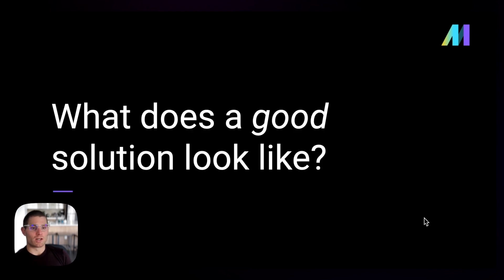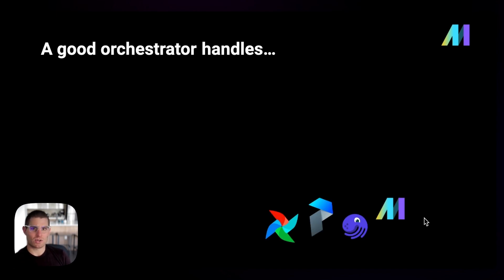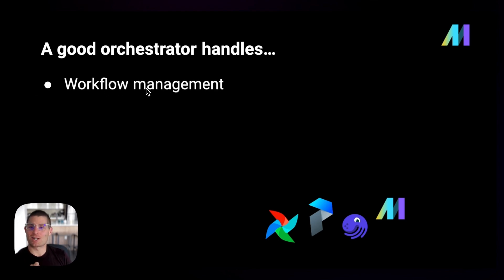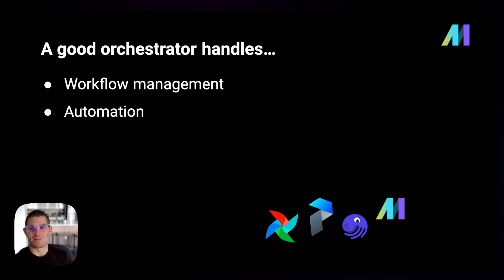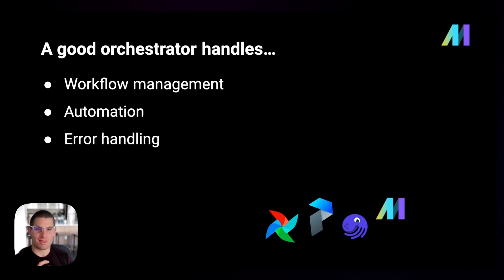A good orchestrator handles a lot of things. First, workflow management — it defines, schedules, and manages workflows efficiently, ensures tasks are executed in the right order, and manages dependencies. Second, automation — engineers should automate as much as possible. Third, error handling and recovery: things break, and orchestrators need built-in solutions for handling errors, conditional logic, branching, and retrying failed tasks.